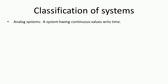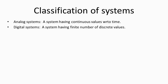Now let us discuss the classification of systems. Broadly we have two types: analog systems and digital systems. An analog system is one having continuous values with respect to time, where inputs and outputs are analogous in nature — examples include amplifiers, attenuators, and rectifiers. A digital system is one having a finite number of discrete values, quantized in amplitude, where the values are either zero or one.